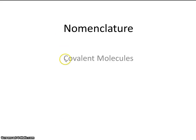Let's continue our study of nomenclature by examining covalent molecules. Now we've already established rules for naming ionic compounds. Now let's make a distinction and study covalent molecules. There are two separate naming systems — one for ionic compounds and one for covalent molecules.